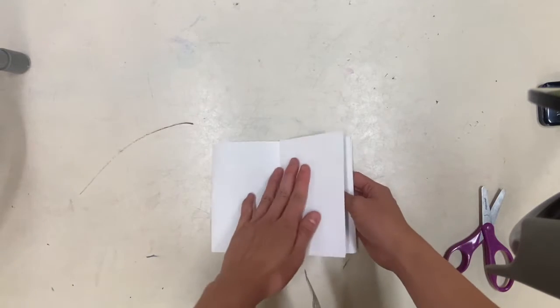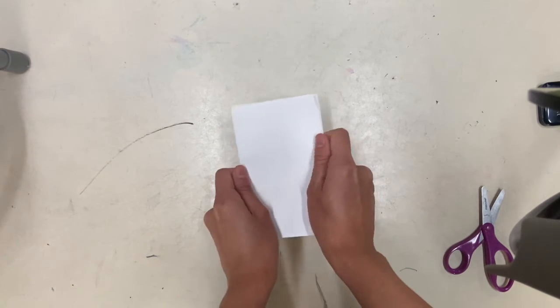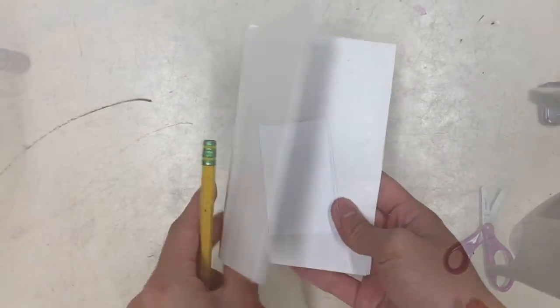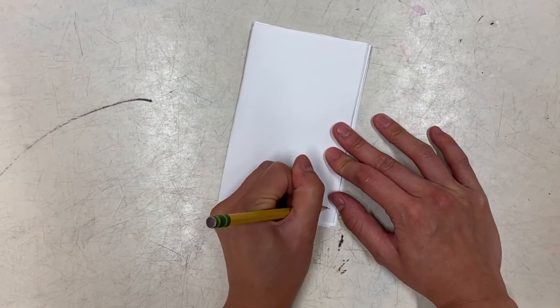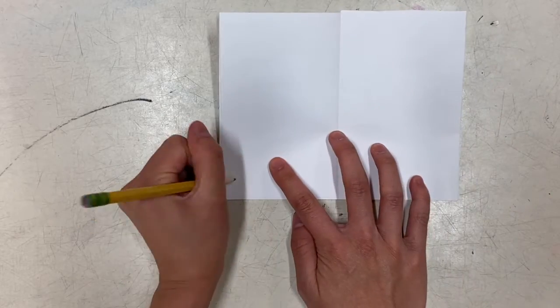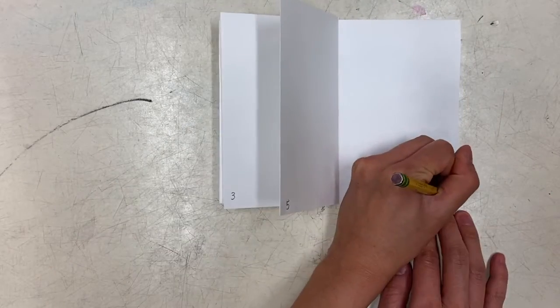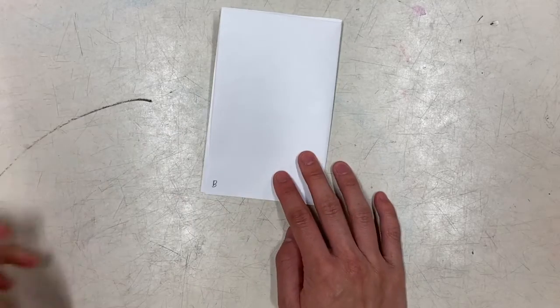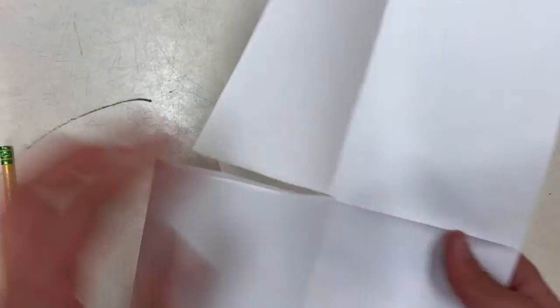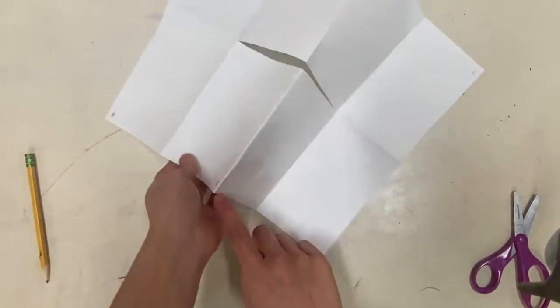I'm going to flatten each page now. Number your pages. On the very front page I put an F for the front, one, two, three, four, five, six, and a B for the back page. So now when I open it up and draw my zine, I will know what page I'm working on.